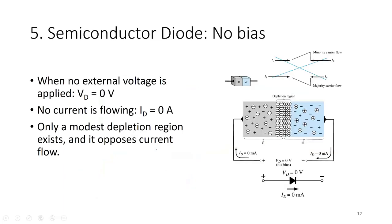For the semiconductor diode with no bias: when no external voltage is applied, the voltage drop across the diode is zero volts, no current is flowing, and the depletion region width is at its equilibrium value. Only a modest depletion region exists and it opposes current flow.